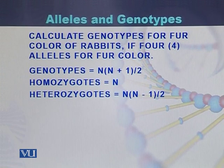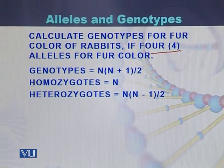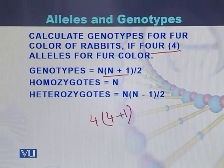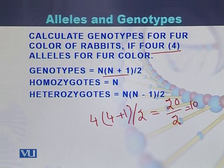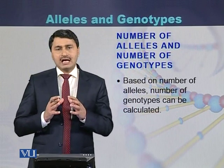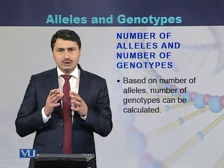If we try to calculate the genotypes for fur color of rabbits, in the case of rabbits there are four different alleles present to code fur color. Using the formula: 4(4+1)/2 = 20/2 = 10. So there are 10 different genotypes. If a gene has four alleles, we can calculate using this formula how many genotypes can be produced, and based on the alleles, how many genotypes will be produced.